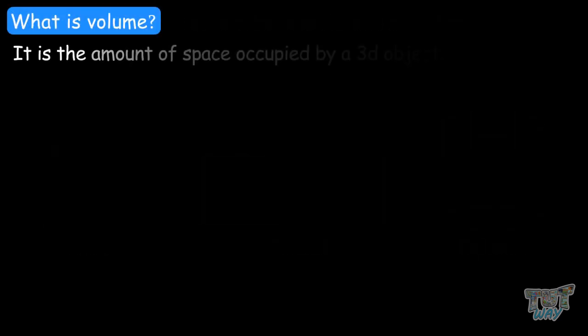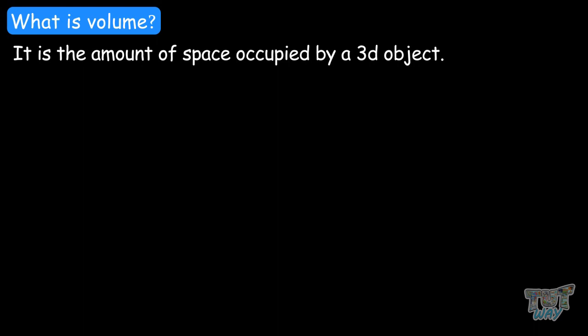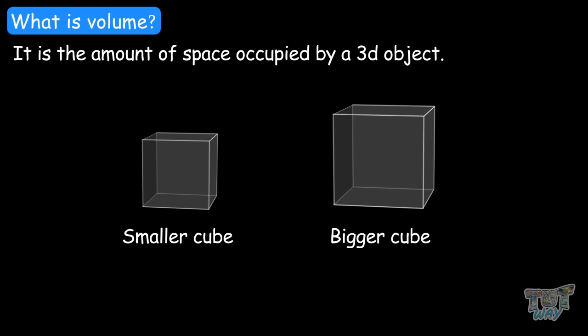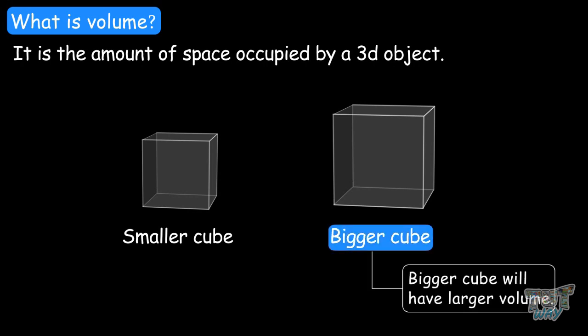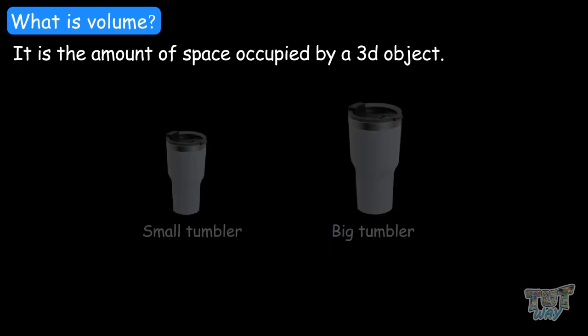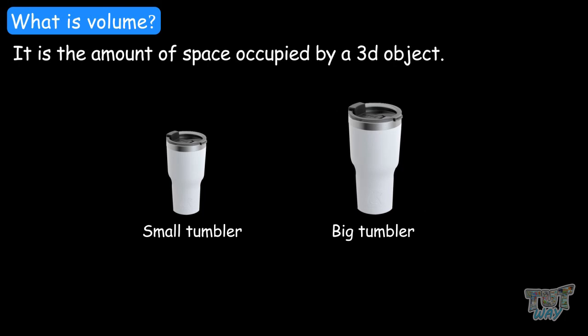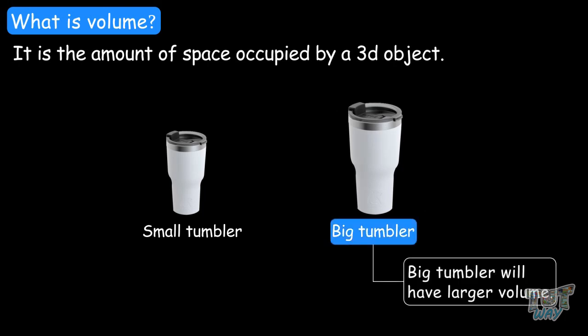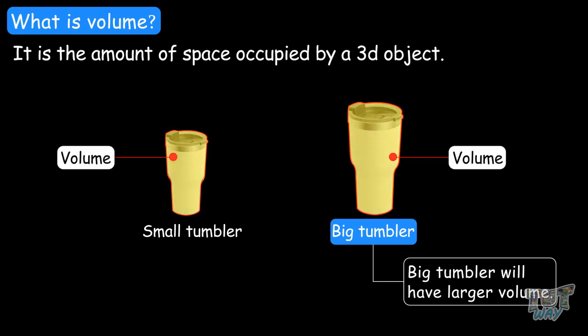First of all, what is volume? It is the amount of space occupied by a 3D shape. For example, here you can see two cubes — one is smaller, and the other is bigger. So definitely the bigger cube will have a larger volume. Similarly, with two tumblers, the bigger one has a larger volume and the smaller one has a smaller volume. So volume is the space occupied by a 3D object.